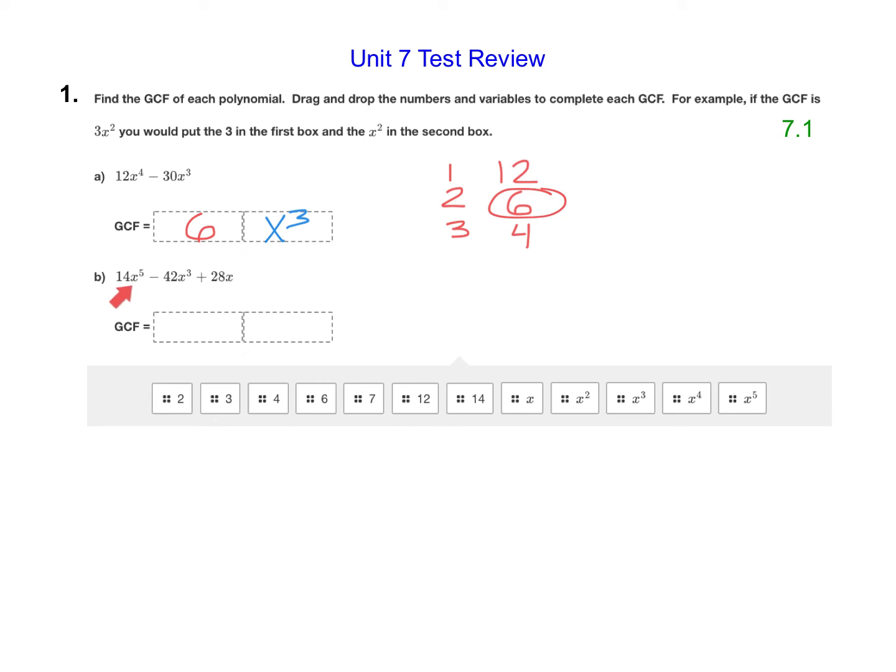Then on part B, we have 14, 42, and 28. Again, I'm going to start by listing out my factor pairs of 14, which are 1 times 14 or 2 times 7.